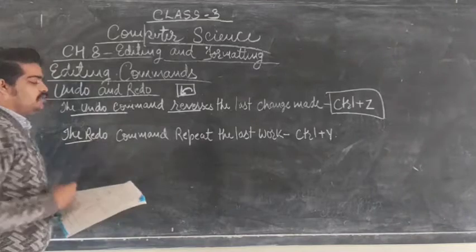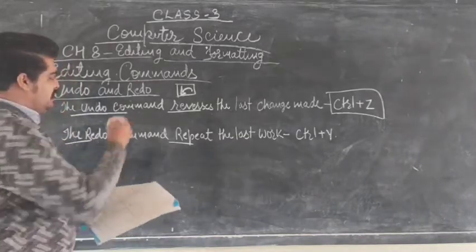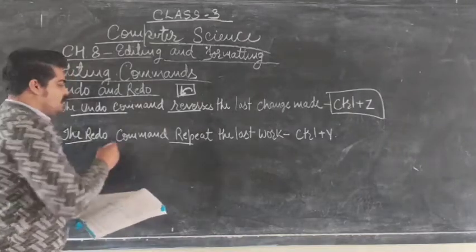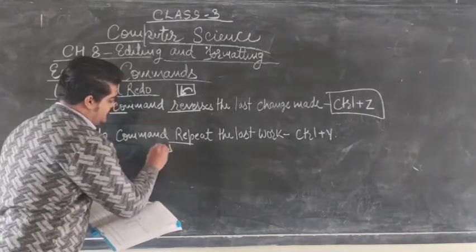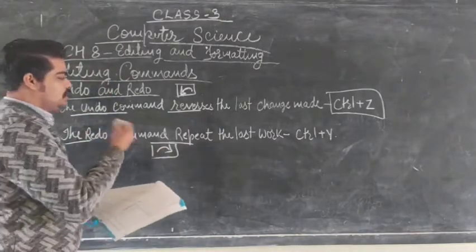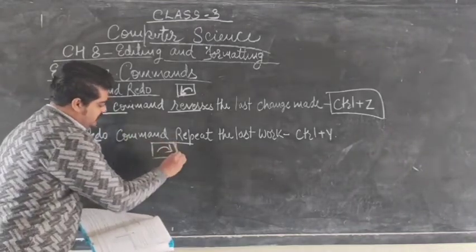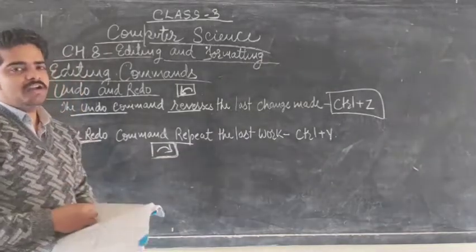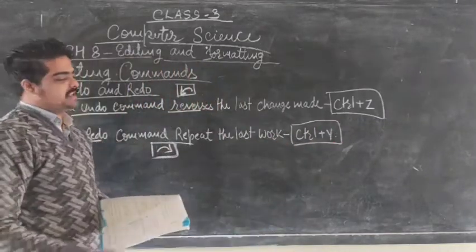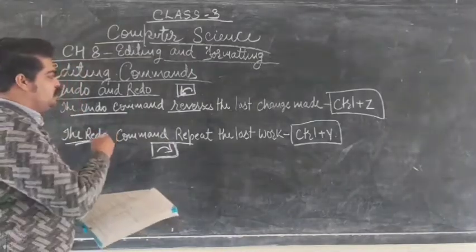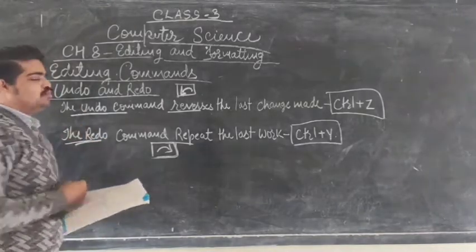The Redo command repeats the last action that was undone. You can use the Redo command by going to the Quick Access Toolbar and selecting the Redo option. Or press the shortcut key Ctrl+Y to redo. In this way you can reverse back or repeat the last action done in MS Word using the Undo and Redo commands.